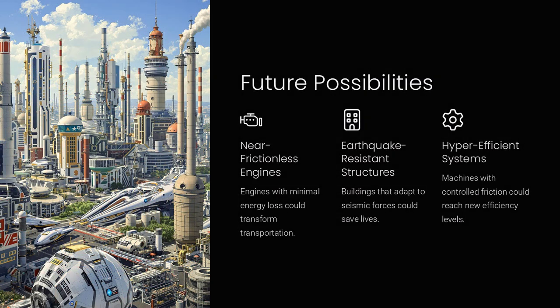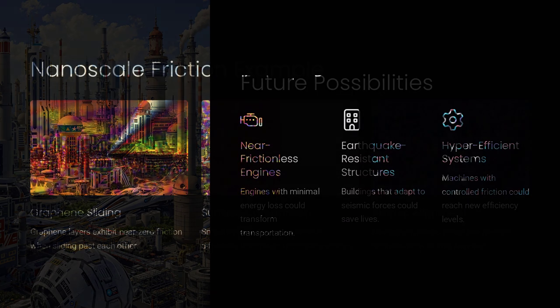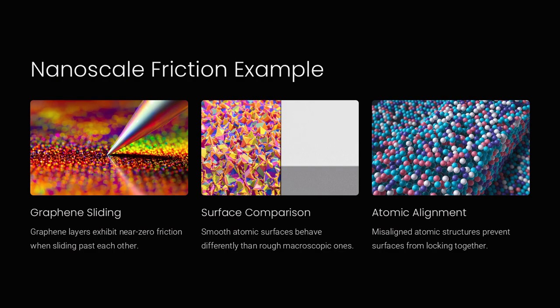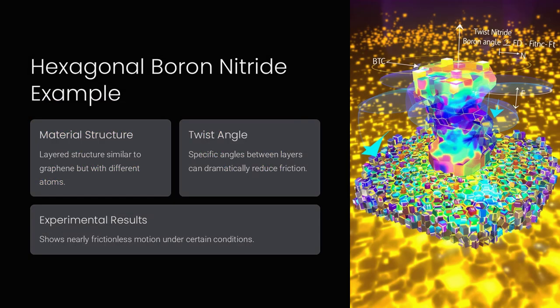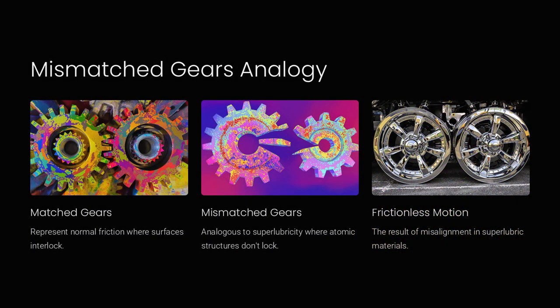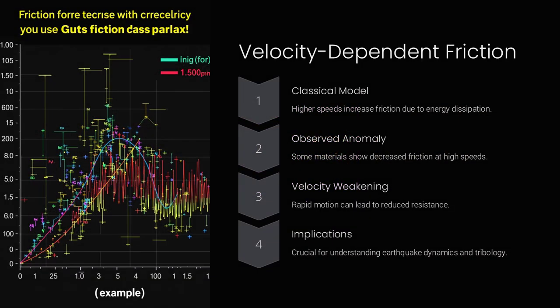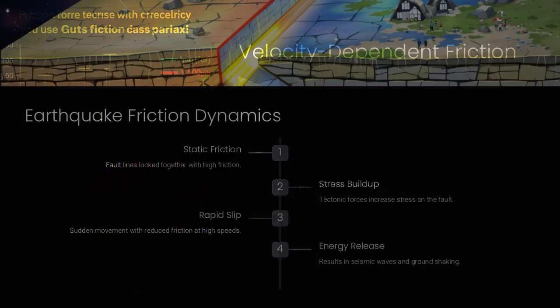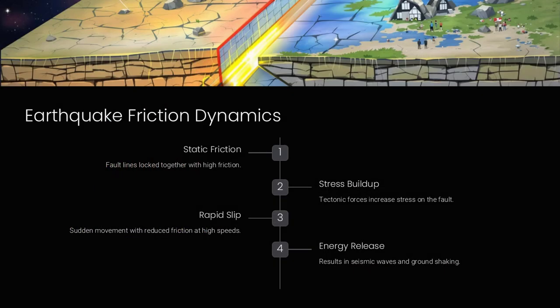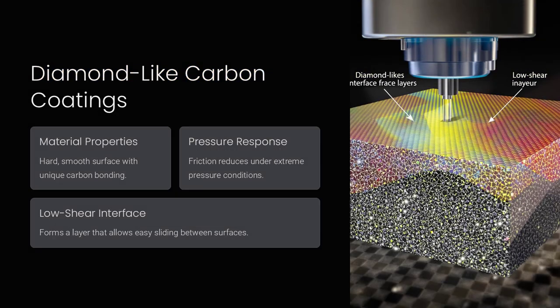For example, at the nanoscale, surfaces that should exhibit significant friction sometimes slide almost effortlessly due to superlubricity, a phenomenon where atomic layers misalign, drastically reducing resistance. Graphene and other 2D materials have demonstrated near-zero friction under certain conditions, defying conventional expectations. How can friction suddenly disappear when it is a fundamental force we rely on?